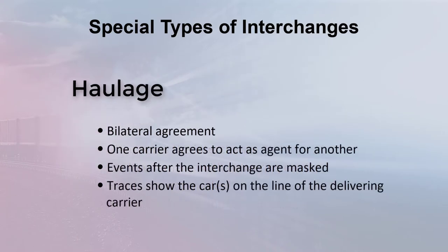A final special kind of interchange is a haulage interchange. Under a haulage agreement, one carrier typically agrees to act as agent for another. The carrier acting as agent is referred to as the haulage carrier. The carrier that hired the agent is referred to as the haulage rights carrier. Typically, the haulage rights carrier pays car hire while the haulage carrier handles the car and haulage interchange is suppressed. All movement activity reported by the haulage carrier is masked so that it appears that the haulage rights carrier made the reports. When there is a haulage agreement put in place, the tables need to be properly set up with railing and both parties need to have signed agreements in place prior to any car movements being done.